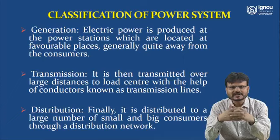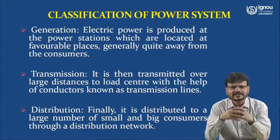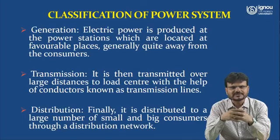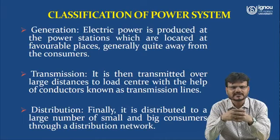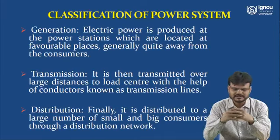Electric power is produced at power stations located at favorable or remote areas, generally quite far from consumers. When power is generated it is transmitted over large distances to the load center with the help of conductors known as transmission lines — these may be ACSR conductors, that is aluminium conductor steel reinforced. Finally, this power is distributed to a large number of small and big consumers through the distribution network.